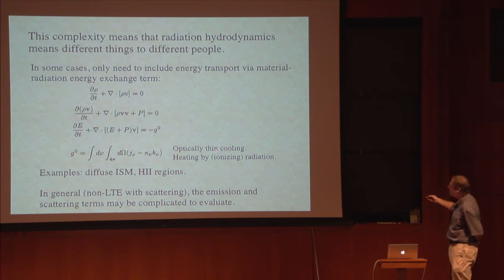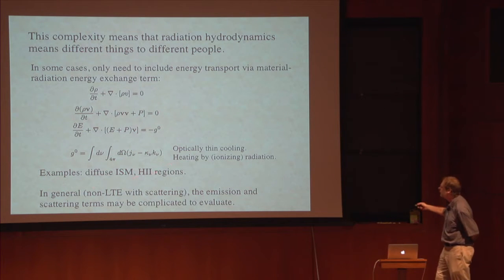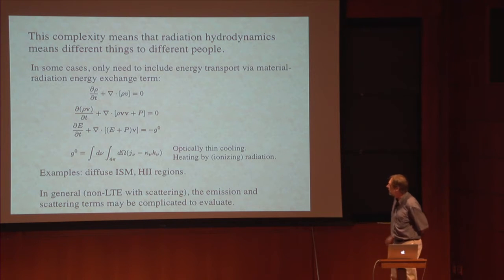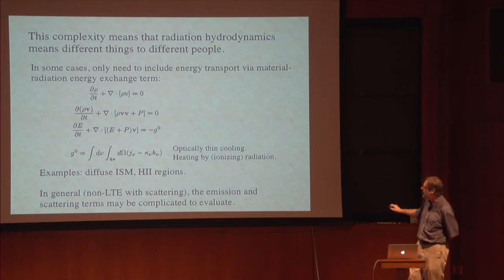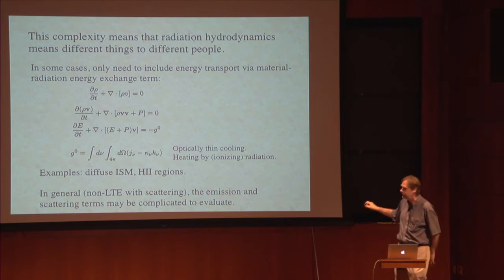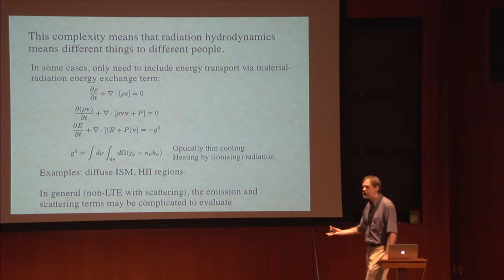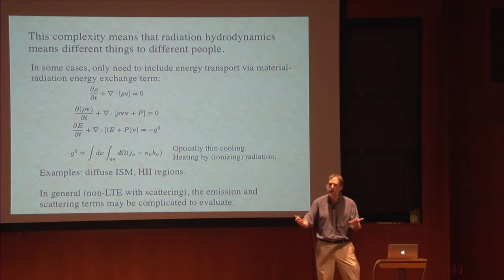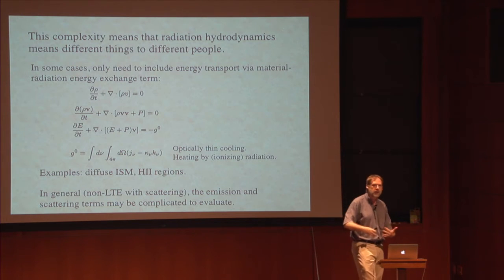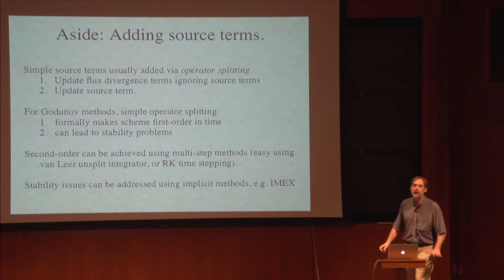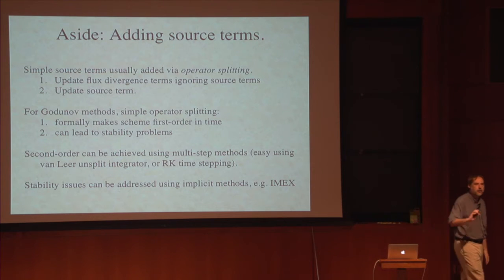This could be modeled as optically thin cooling in the interstellar medium, HII regions, and so on. Even in this regime, if you're doing non-LTE problems, this source term could be quite complex to calculate. Some people call this radiation hydrodynamics — hydro with optically thin cooling. This is a chance for a quick aside on how you would do that in a Godunov scheme.